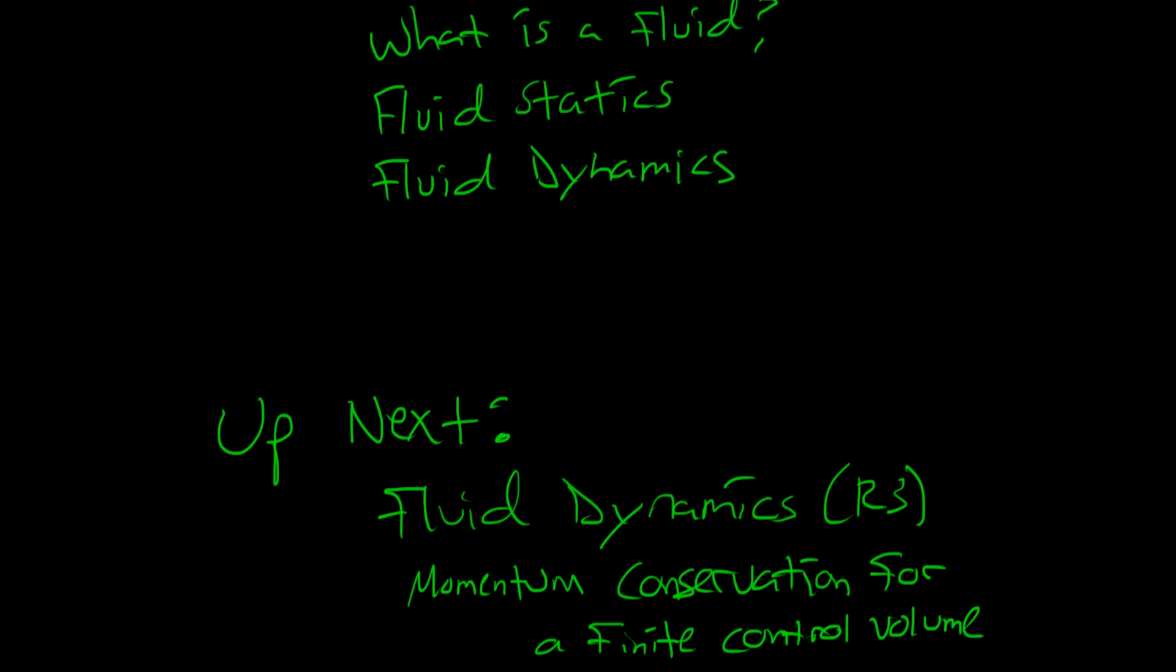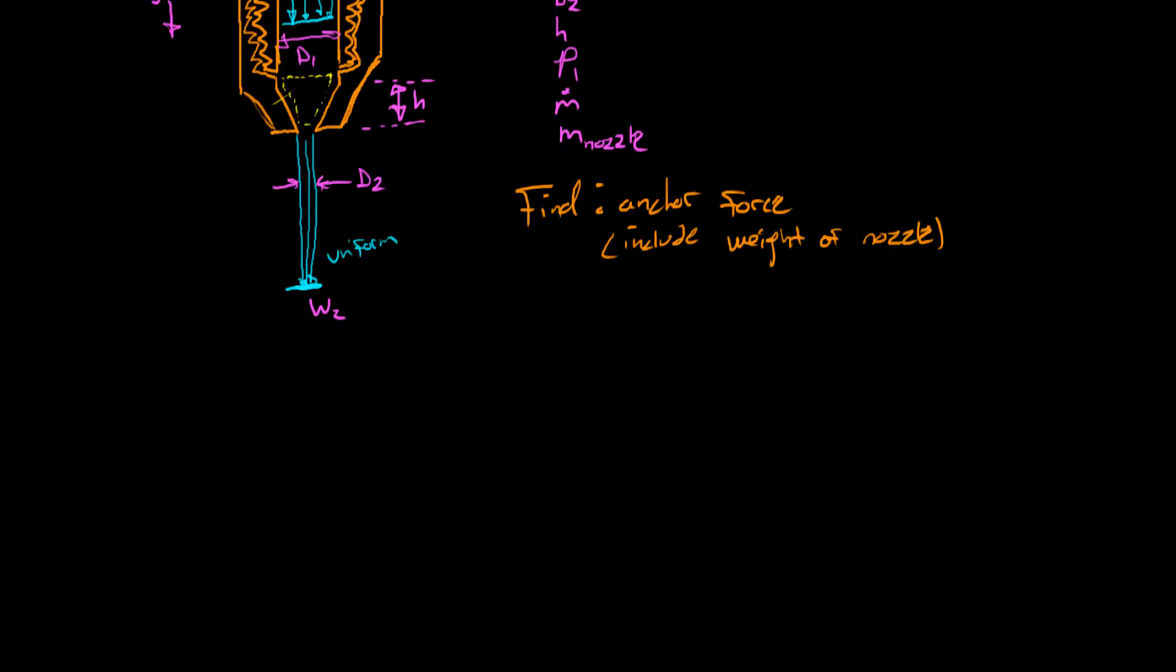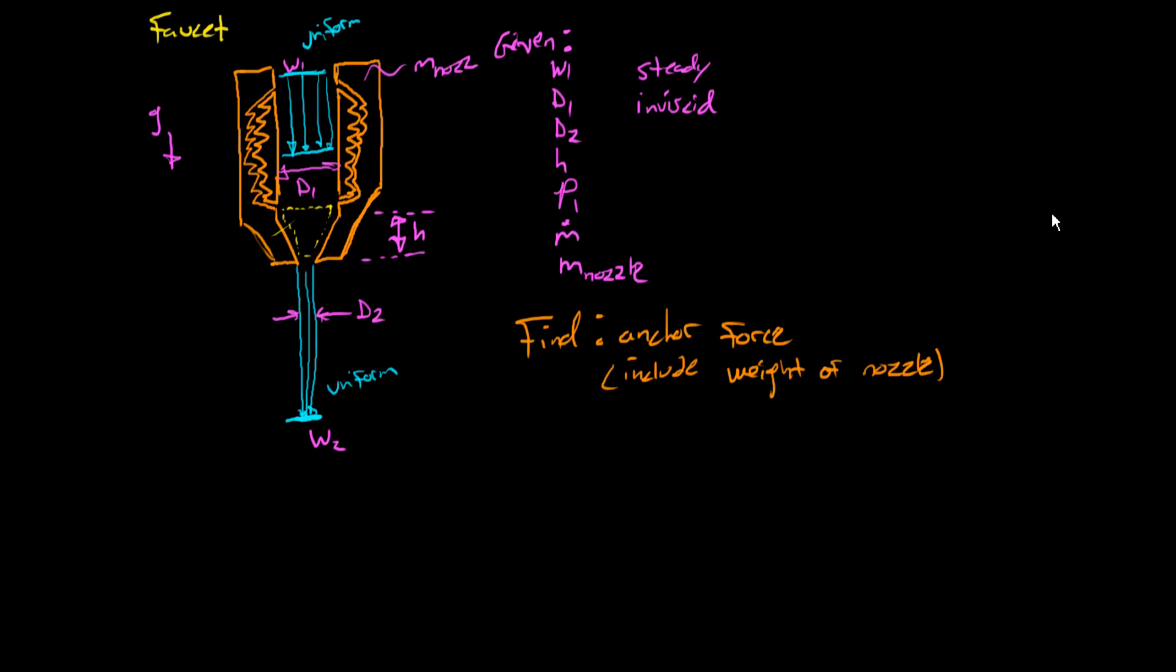This example of the conservation of momentum for a finite control volume adds a little bit more complexity. So forgive my terrible drawing skills, this is supposed to be a faucet.